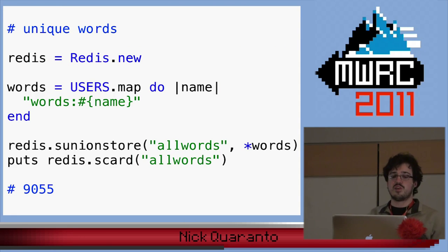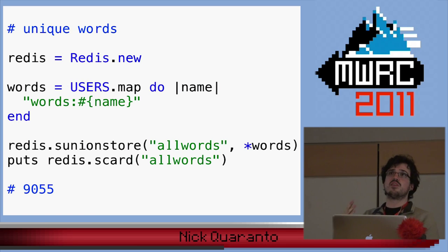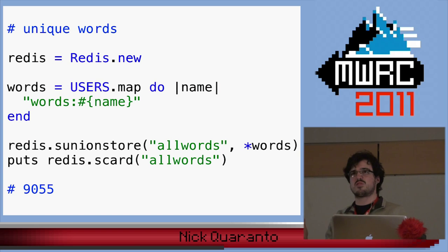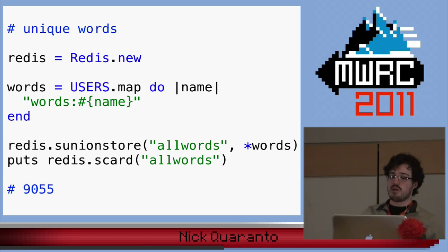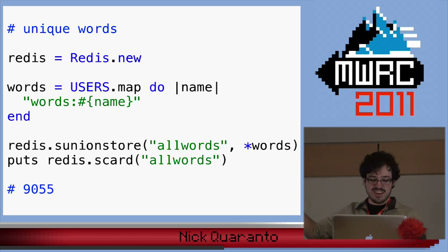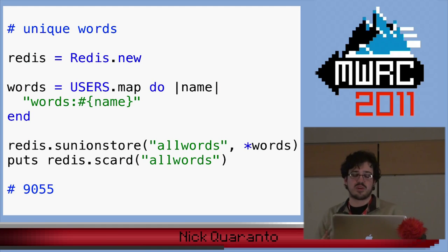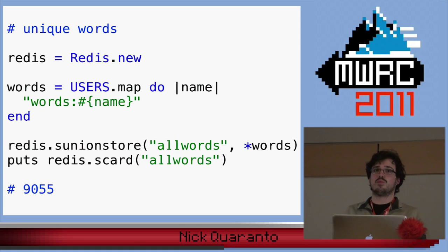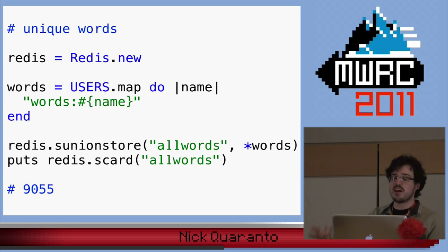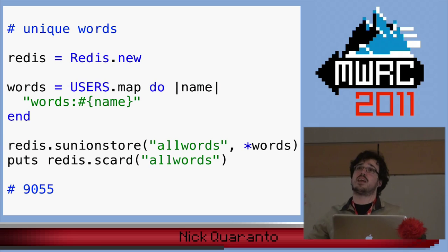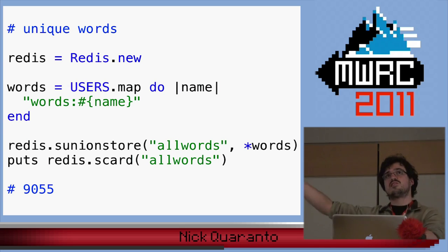Here's an example of that in Ruby: I'm going to use sunionstore, which will do a union of all the sets I give it into a new key. Into all_words, I'm going to store the union of these three sets. I've got a bunch of words they didn't all say, and the only repeated word is var, so var only shows up once in the new set because it's a union. To get the amount of things in a set, it's not straightforward — in real math land, we wouldn't get the length or size of a set, we'd get the cardinality. So the Redis equivalent of the length of a set is scard. Last night the all-words set was around 9,000, and that's doing some analysis on a different key.